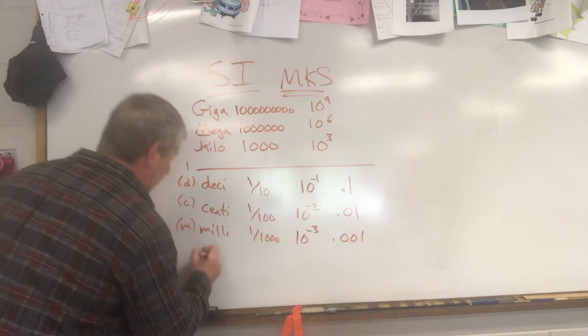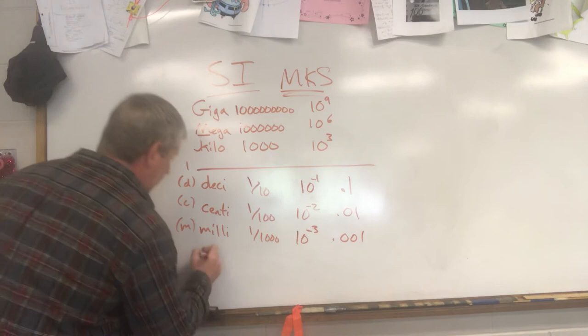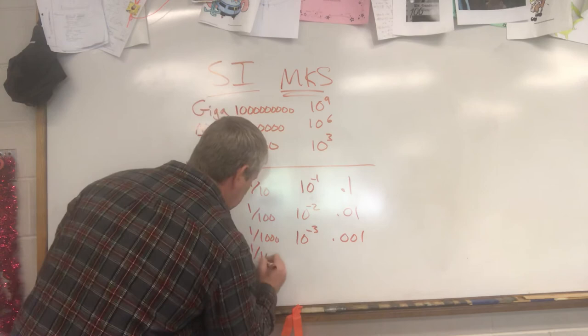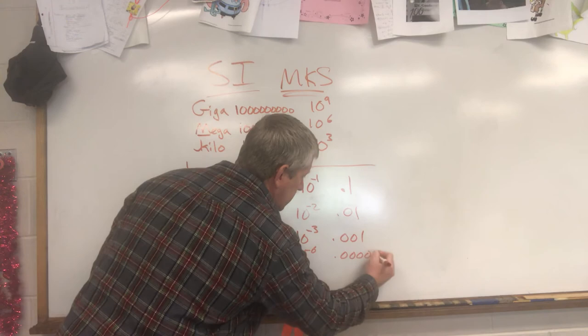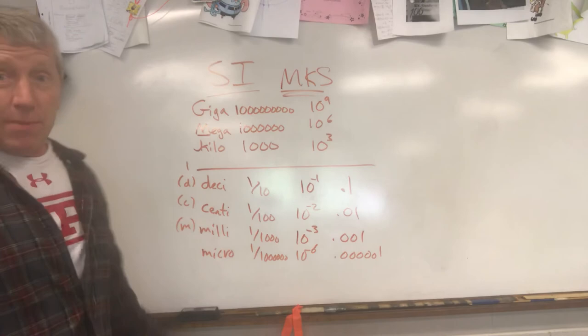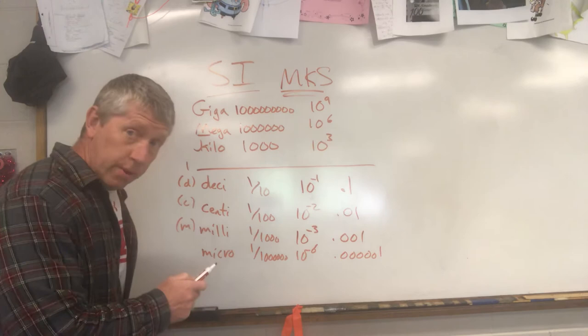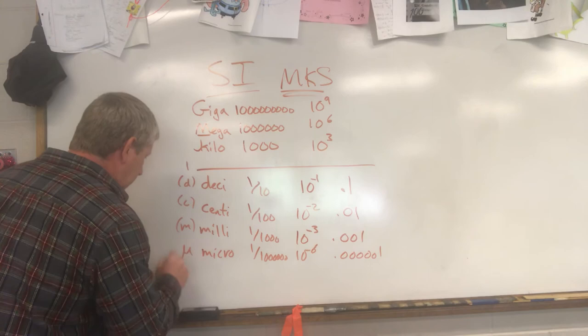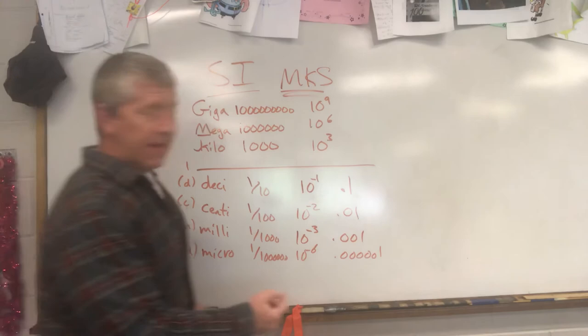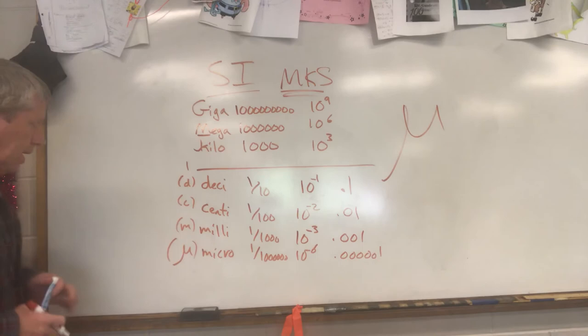Next: micro. Micro means one one-millionth — ten to the negative sixth: 0.000001. The abbreviation for micro can't be m because that's taken by milli. Instead it uses the Greek letter mu — spelled like a u with a little tail in the front. That's the abbreviation for micro.